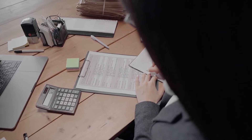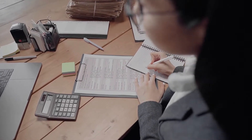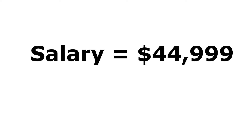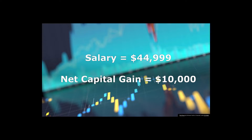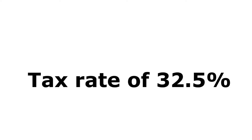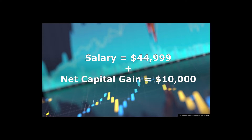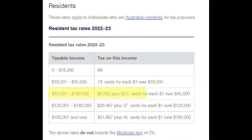For individual taxpayers that sell shares at a profit, the capital gains tax rate depends on which individual marginal tax bracket you fall into in the year you sold the asset, when you add all your income together from all sources. For example, if you earn $44,990 from your day job and you make a $10,000 net capital gain from selling an investment, then your capital gain will be taxed mostly at the 32.5% marginal tax rate. This is because your total taxable income will be $54,999, which is above the $45,000 tax bracket that applies in 2022 and attracts the 32.5% tax rate. If you have earned more income then you could pay even more capital gains tax at a higher marginal tax rate.